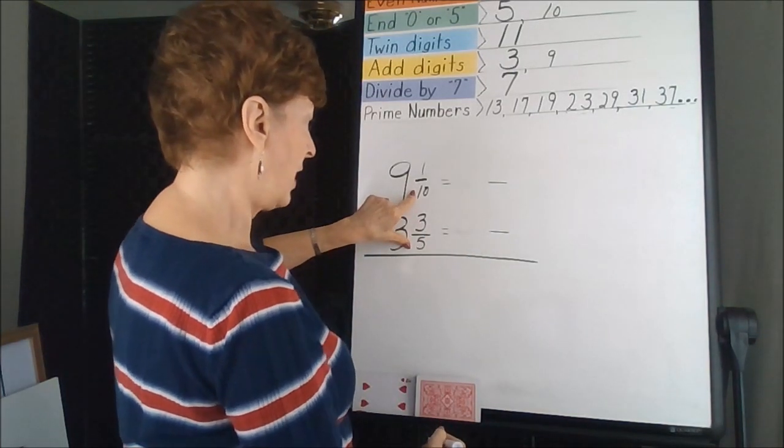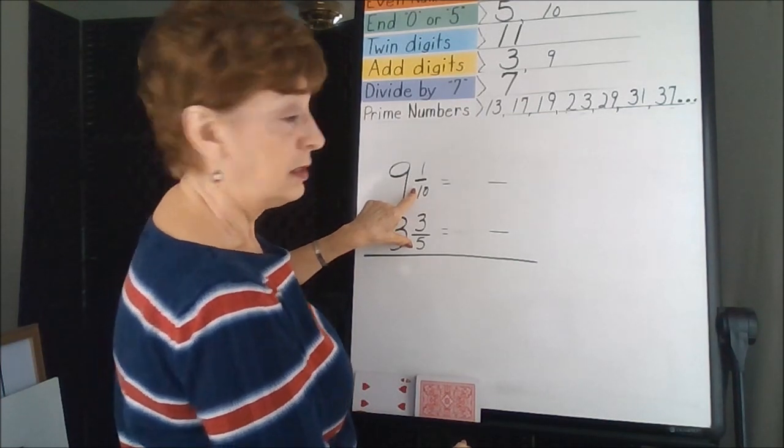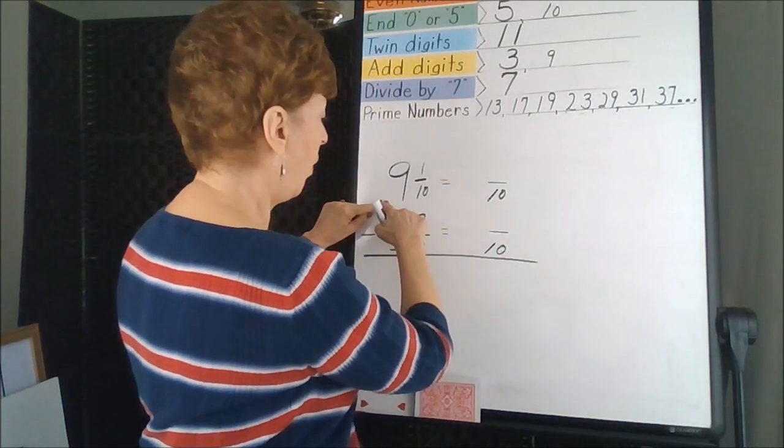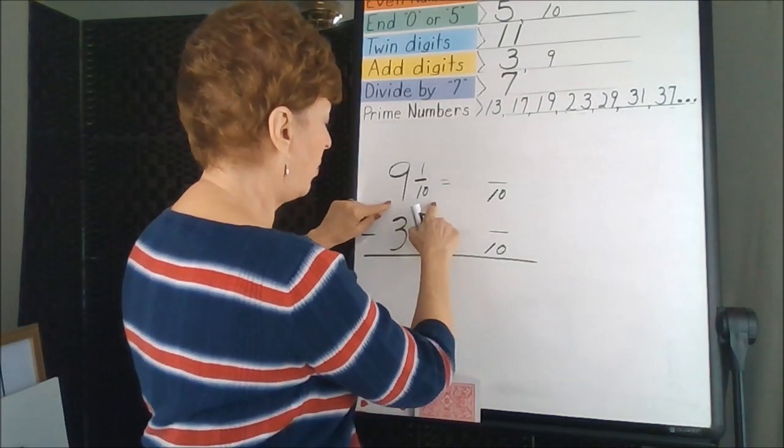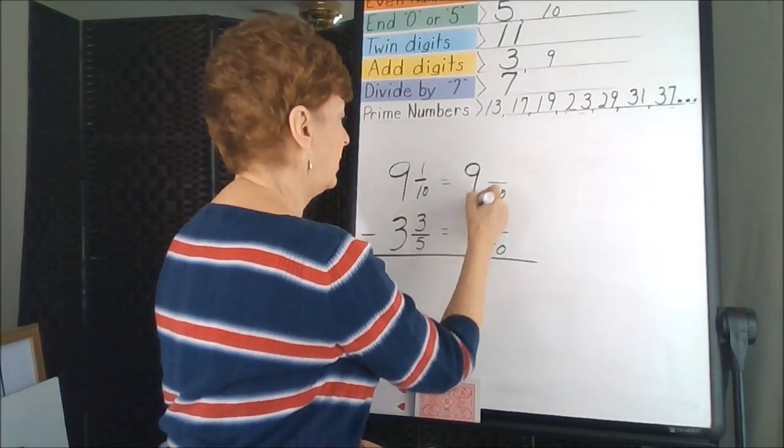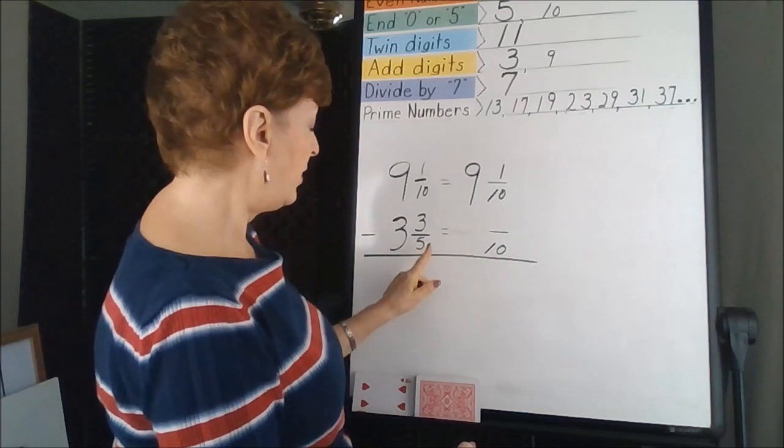The denominator that's common now is 10. So 10, this whole fraction is already in tenths, so it just gets copied right over. This is so easy right there. That's a gift. Then you're going to have to think.